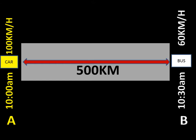The distance between the two towns is 500 kilometers. On the far right of the screen we have town B at the bottom right. The bus starts at 10:30 a.m. and is represented by the white box. Its speed is 60 kilometers per hour. Let's see how we calculate the time where the two vehicles are going to meet.